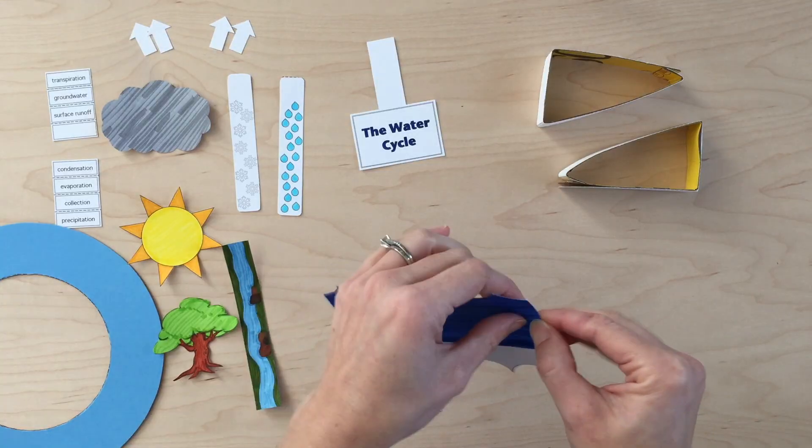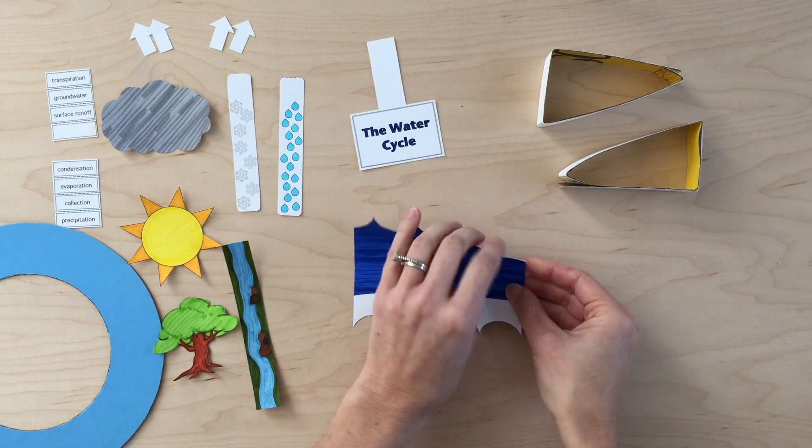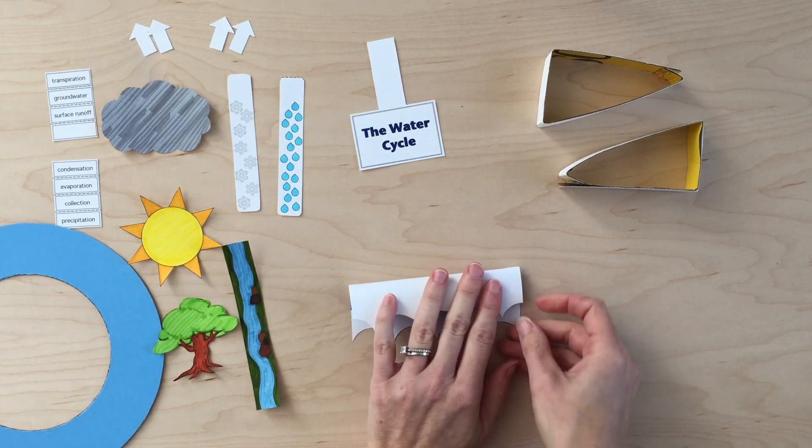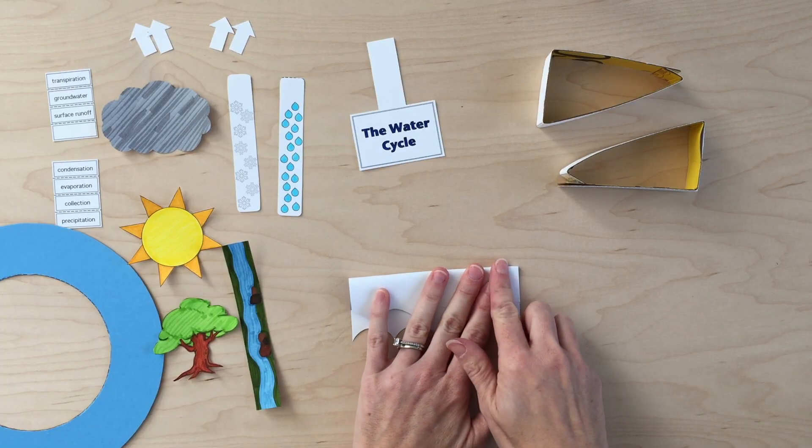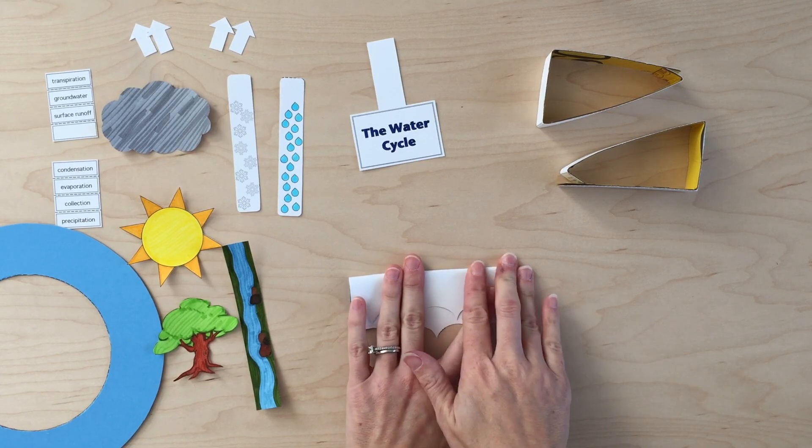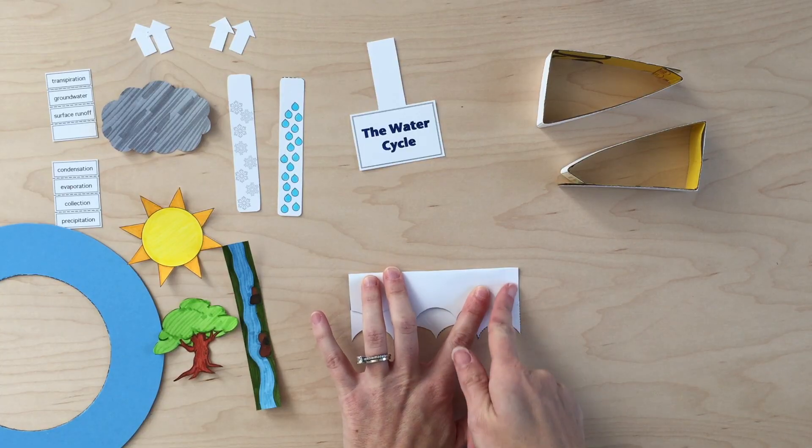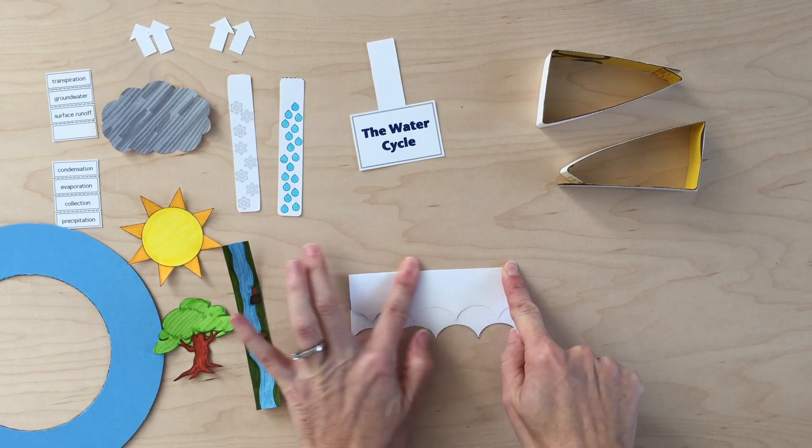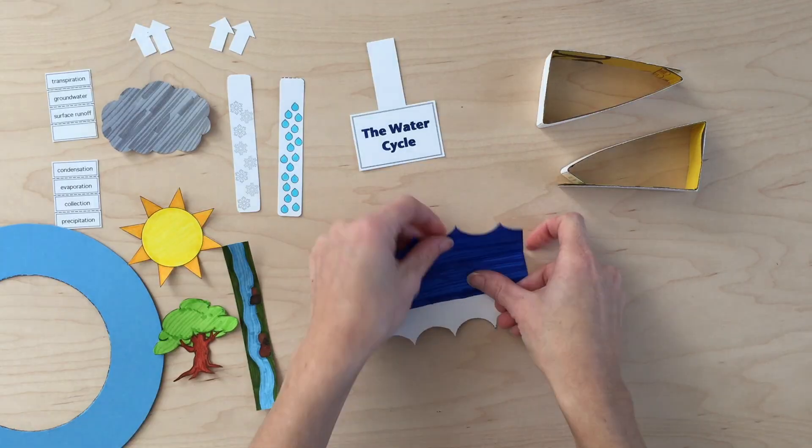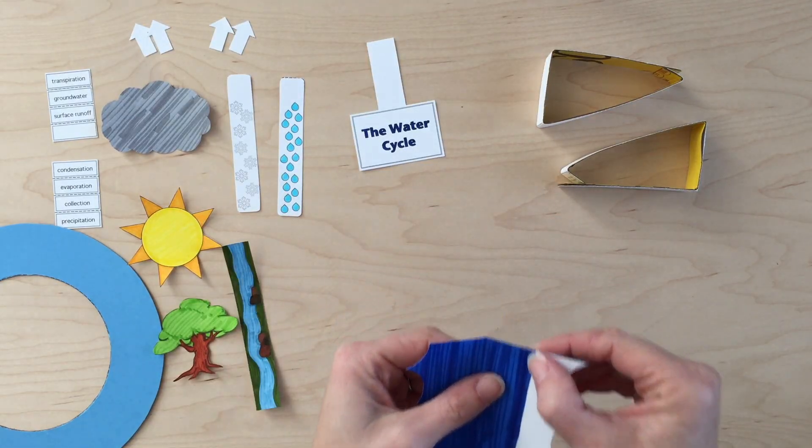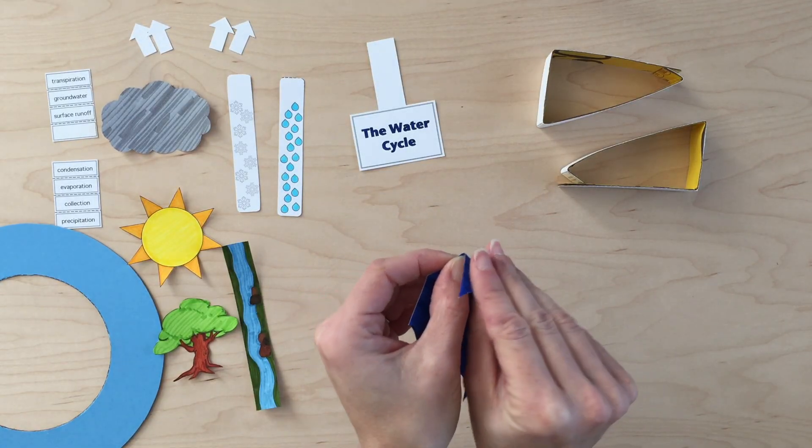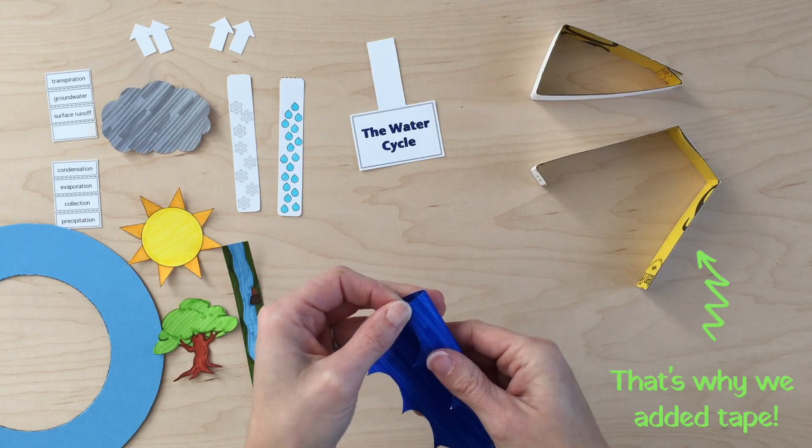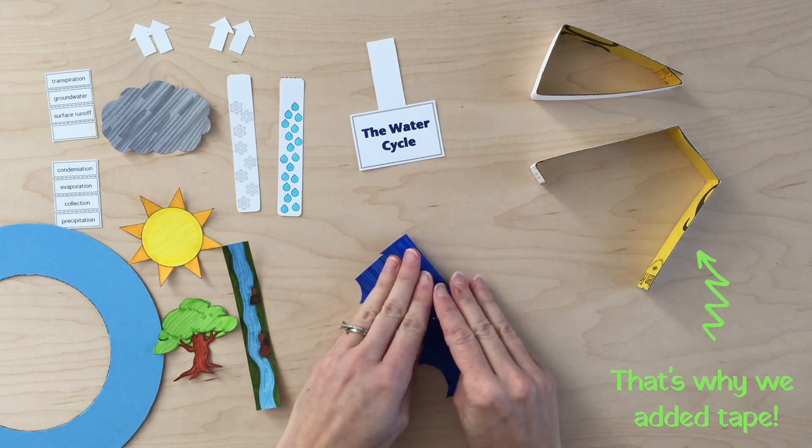The fold lines on the ocean might be a little hard to see if you colored it a dark blue like I did, but you're going to fold forward. I can tell that I'm folding on the line because these edges match each other. Then open it up, look for the other line, which is right here.